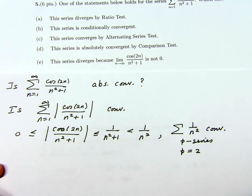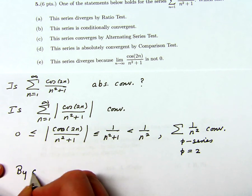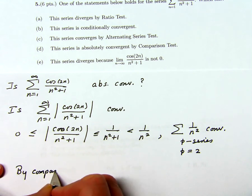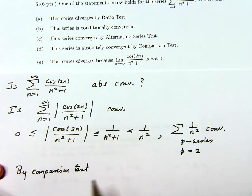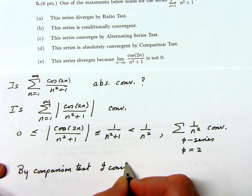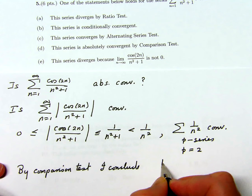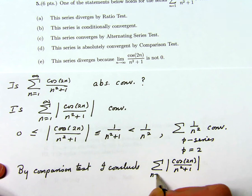So now by the comparison test, I conclude that the sum of the absolute values of cosine 2n over n squared plus 1 converges.